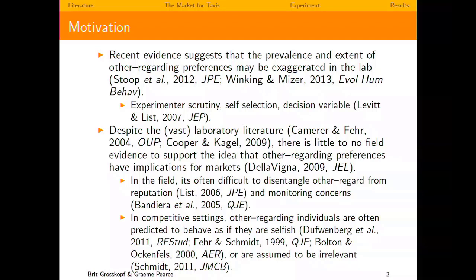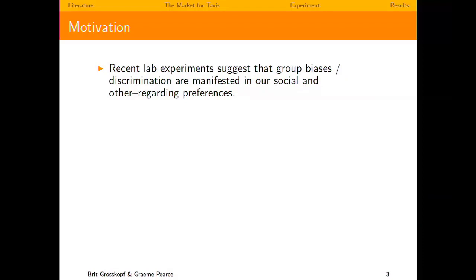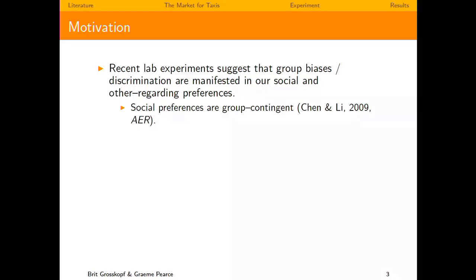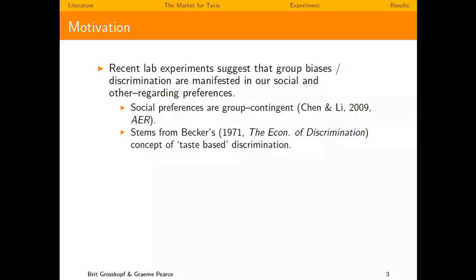Another motivation of our study is that on top of the realization that people may have other-regarding preferences, we also have quite a bit of lab evidence that people tend to condition their behavior depending on with whom they're interacting. We can see group biases popping up. There's an earlier study published in the AER by Chen and Li that looks at social preferences — a broader terminology that includes other-regarding preferences — and shows they are group contingent.